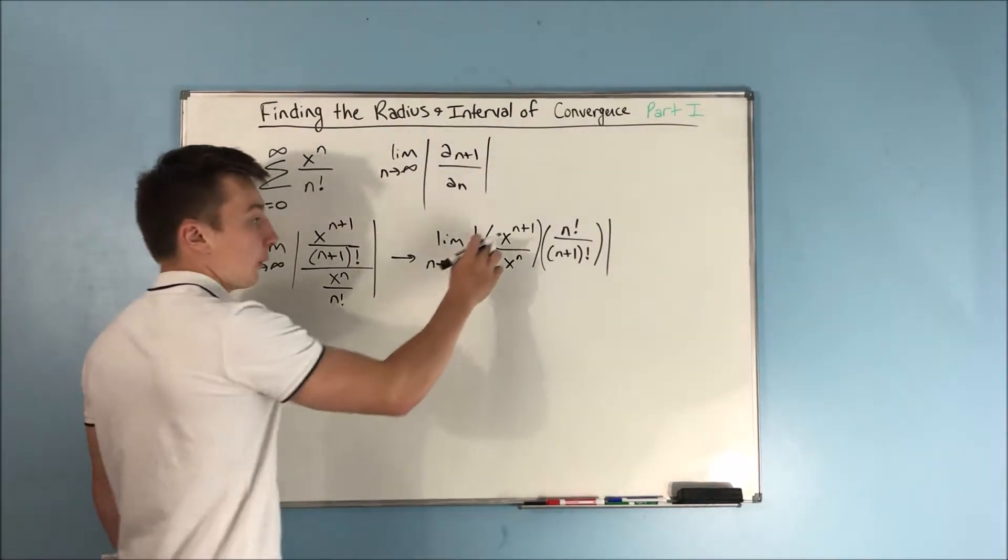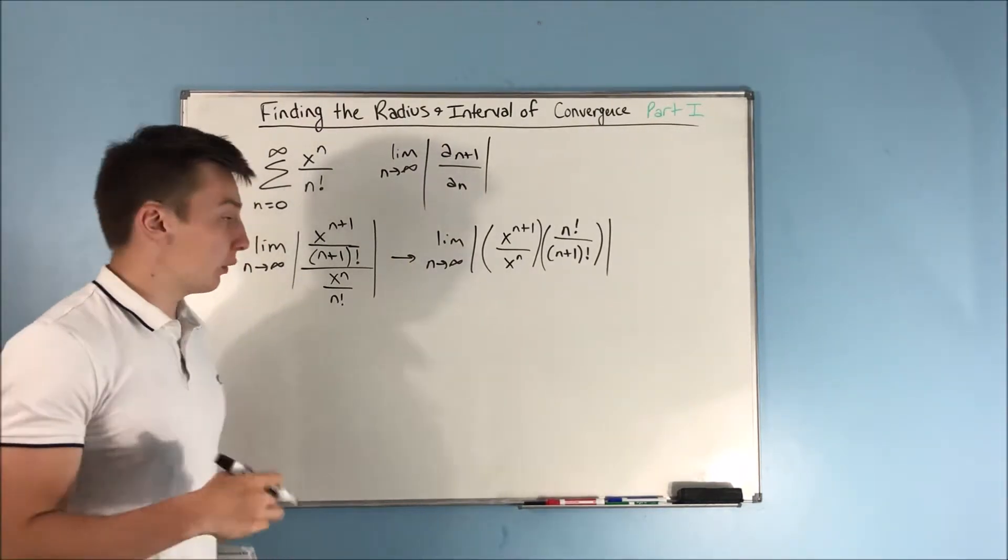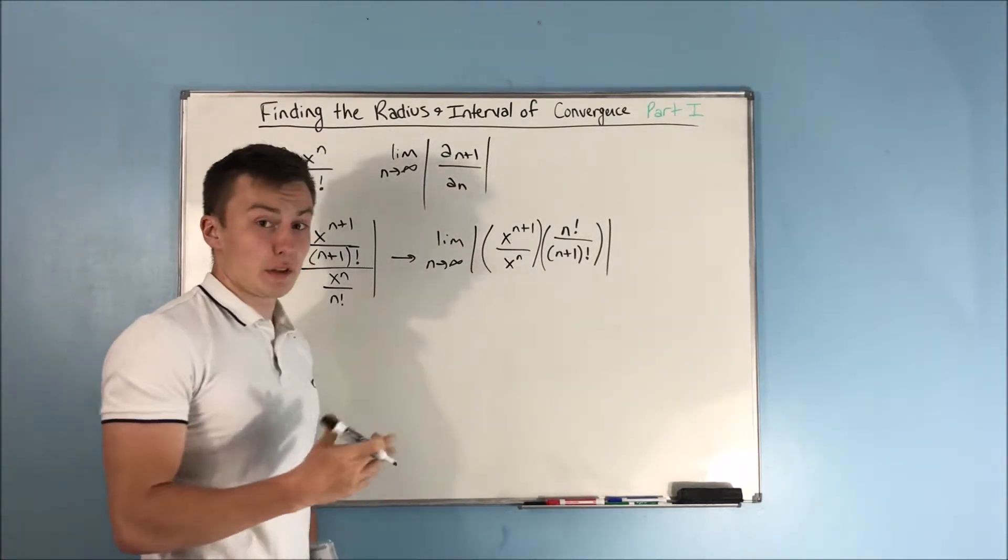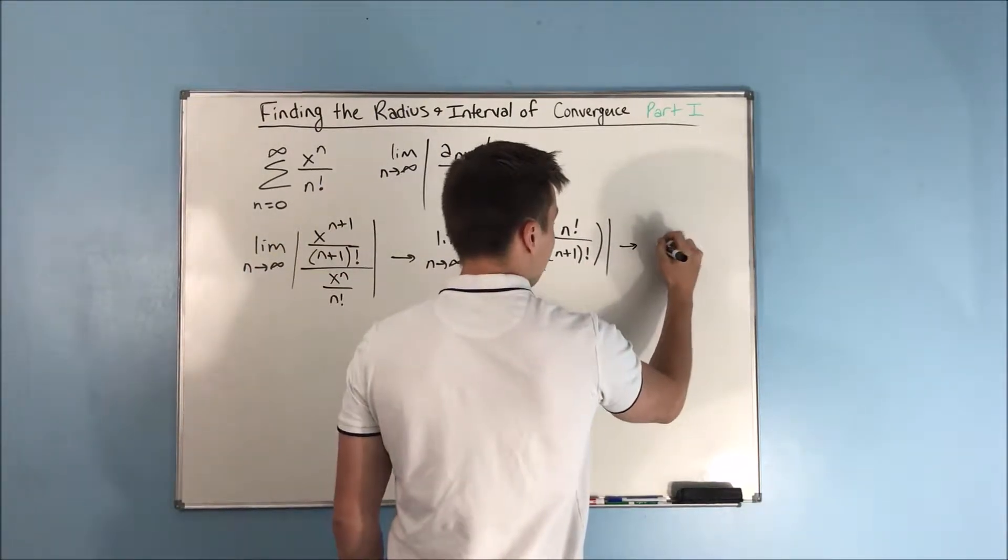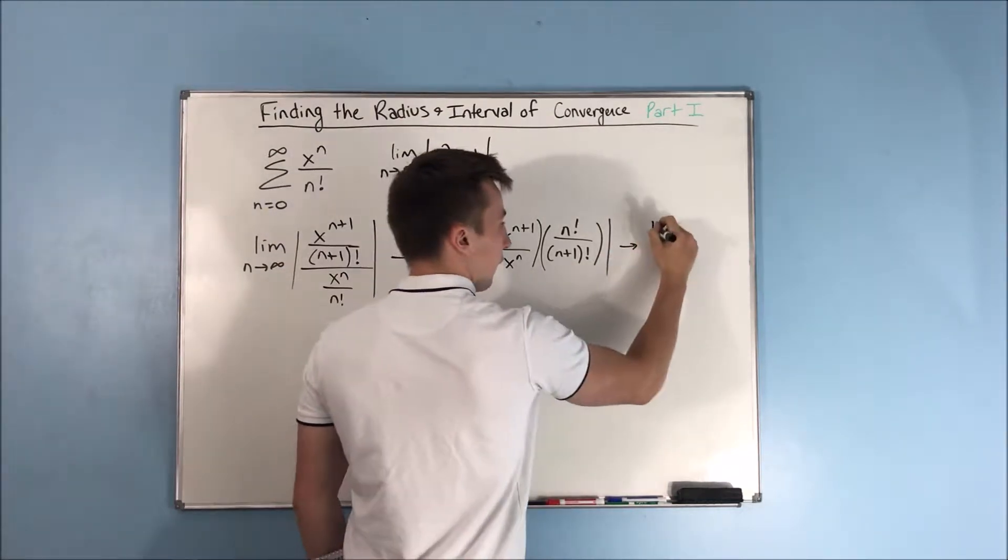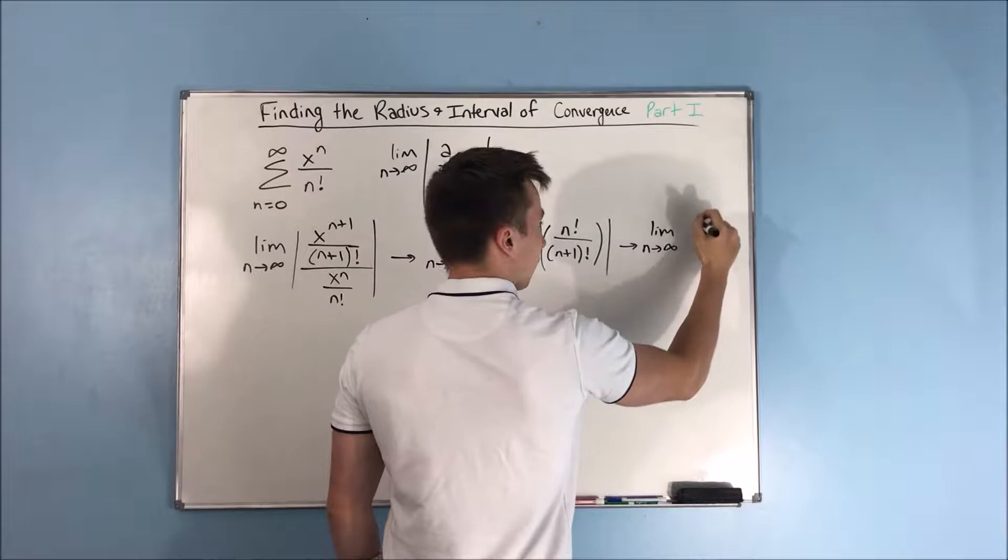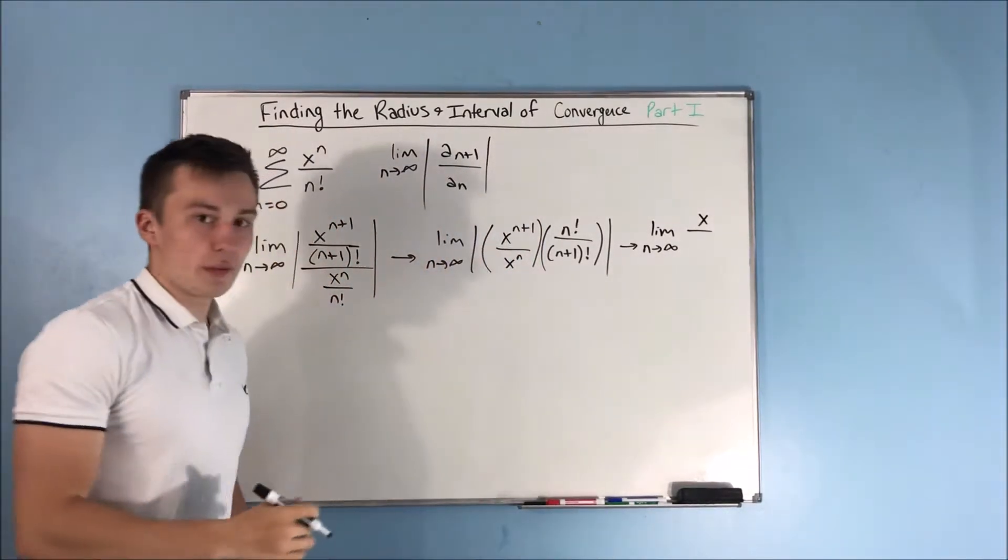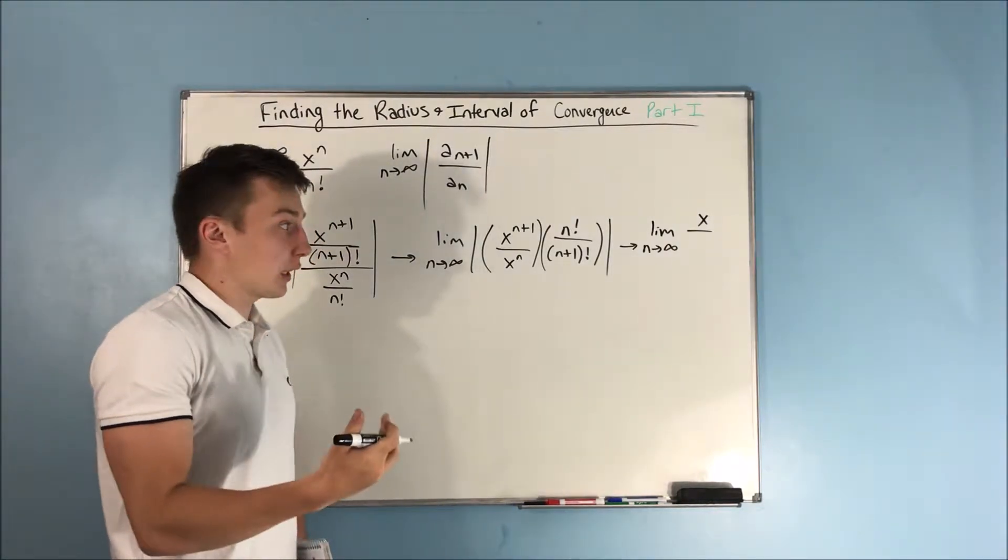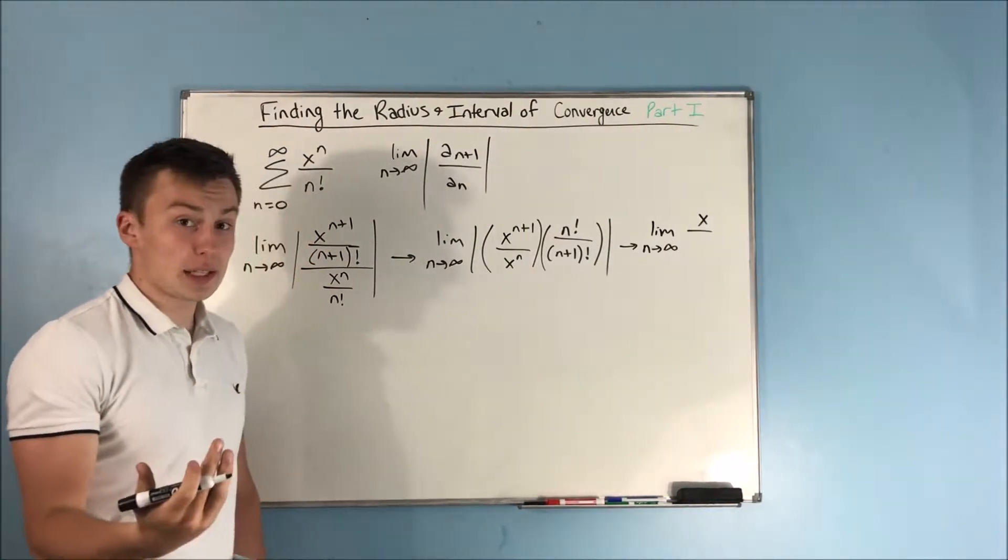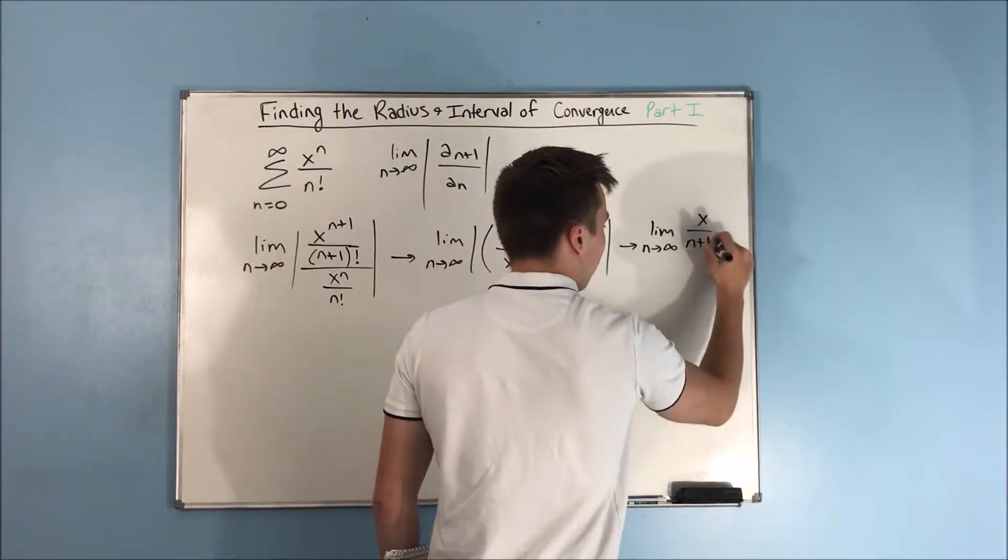So first off, what's going to happen here with this x to the n plus 1 over x to the n? We'll just get x, right? The n's go away, we're just left with x to the first power. And what about this n factorial over n plus 1 factorial? Well, this n plus 1 factorial is just n factorial times n plus 1. So the n factorials cancel out and we're left with n plus 1. So we get x over n plus 1.